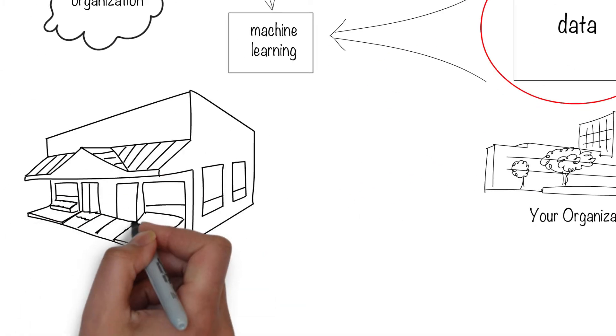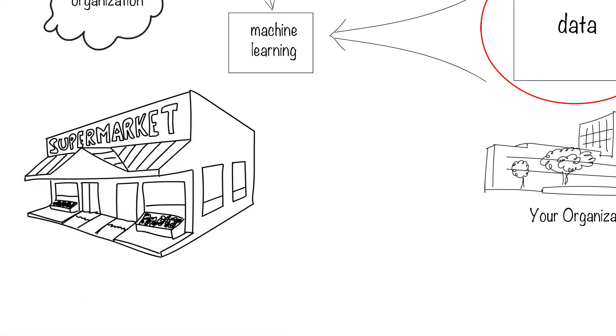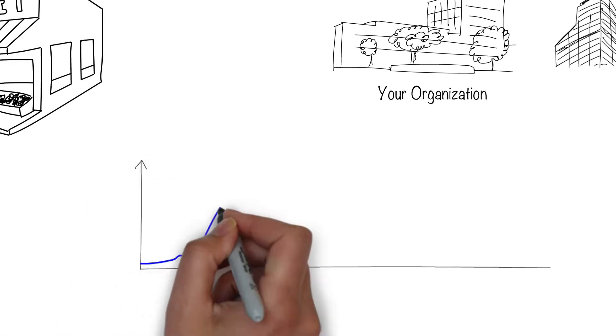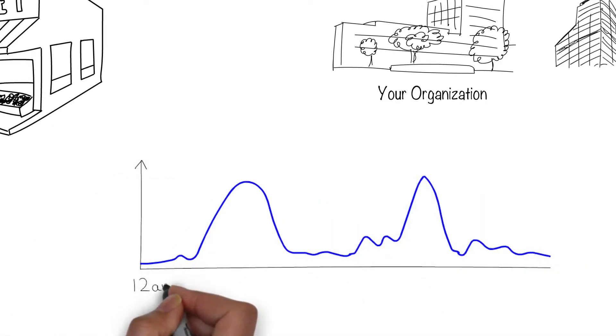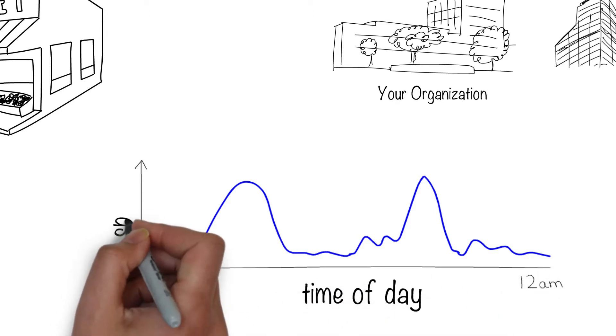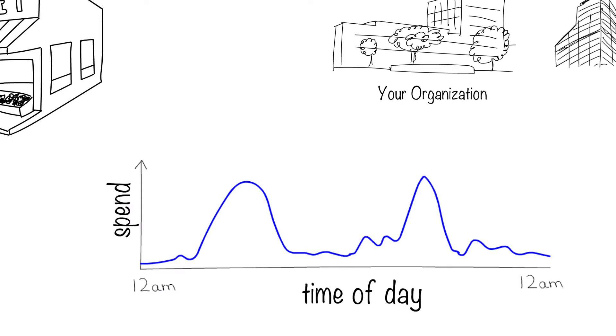Say you run a retail store selling groceries. Say your store is open 24 hours a day, and you have data about when your customers visit and how much they spend. You might want to look at this data to have a machine figure out when to open the store for business.